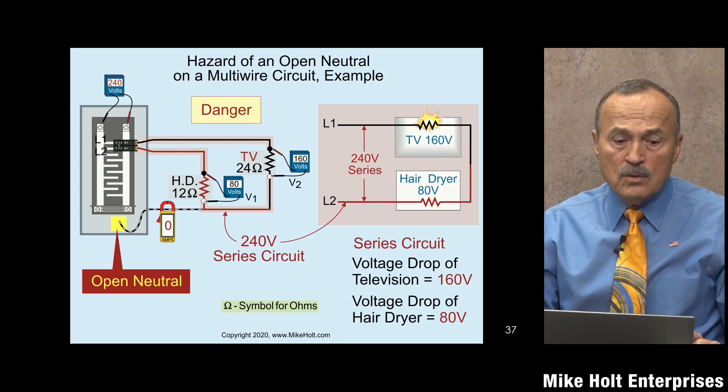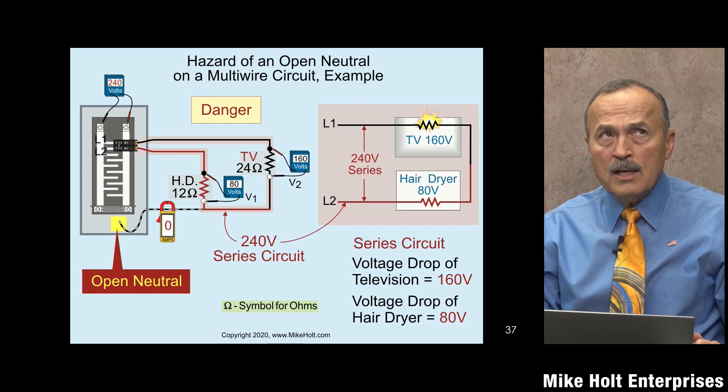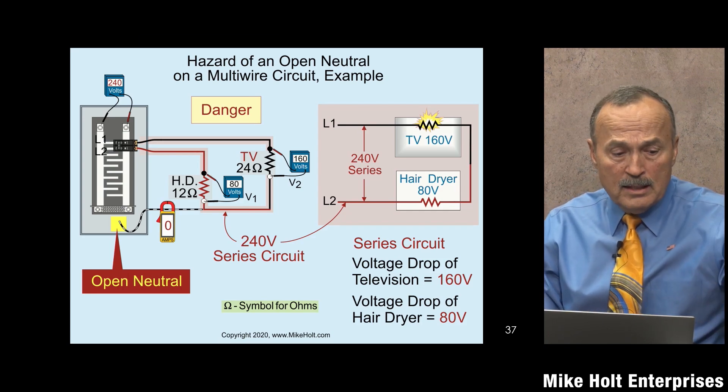Kurt's Murphy's Law of the Multi-Wire Branch Circuit states: you will always damage the most expensive piece of equipment connected to the multi-wire branch circuit, by the square of the value of the product. So if you have a $3,000 TV and a $30 coffee maker on the same multi-wire branch circuit and there's a failure, the $3,000 TV will sacrifice itself to protect the $30 appliance — determined by the square of each value.